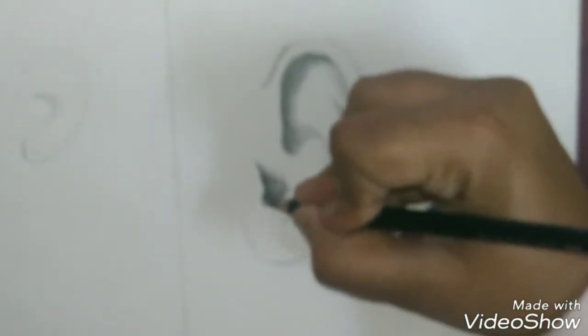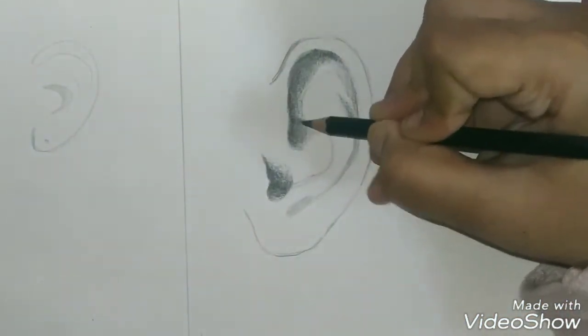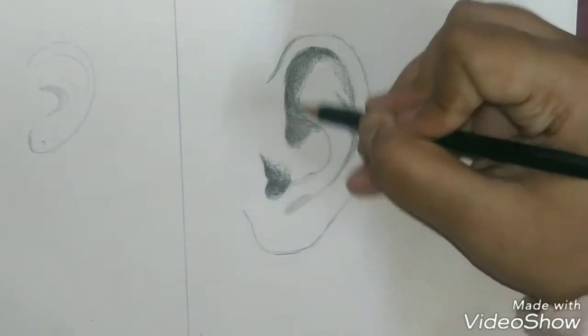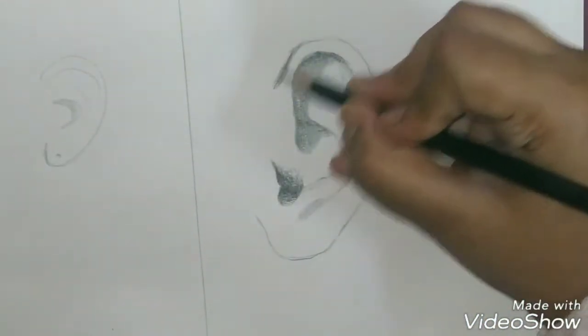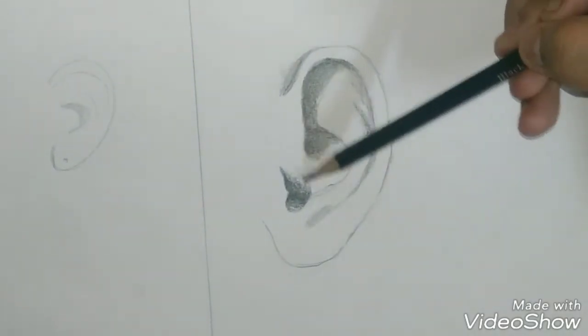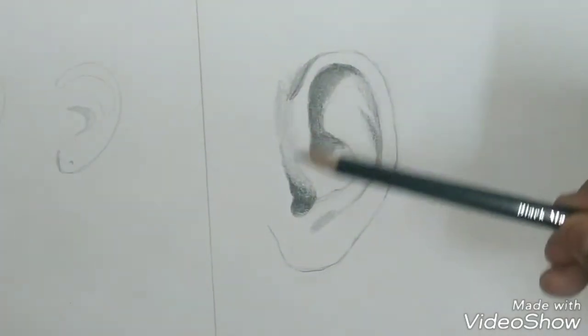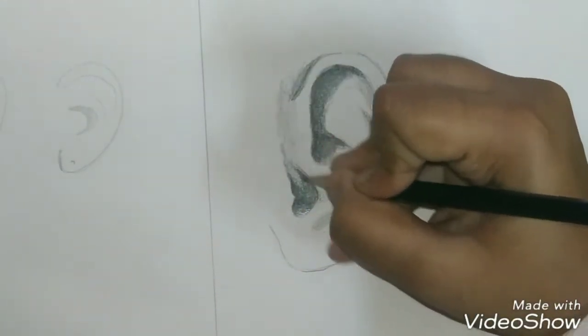So once I'm done shading the darkest parts, the spots don't really look that dark, so I'm going to go ahead and darken them. And once I'm done, I'm going to take a lighter pencil, a 2B or an HB perhaps, and then I'm just going to shade the whole ear now.